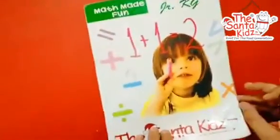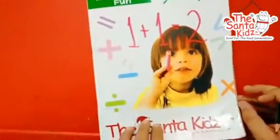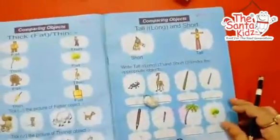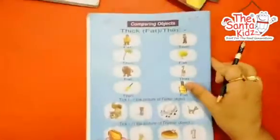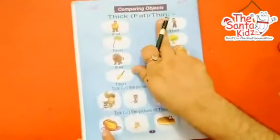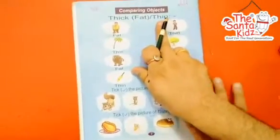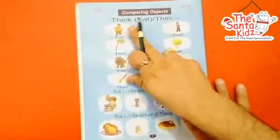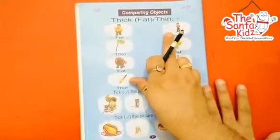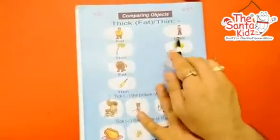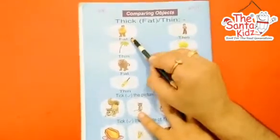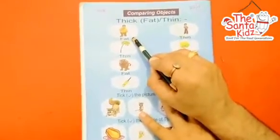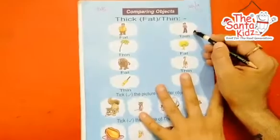This is your mathematics activity worksheet. In this, you have to complete page number seven — Comparison of objects. Thick and thin. Here we have two boys. This boy is fat. This boy is thin.